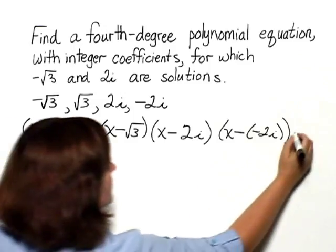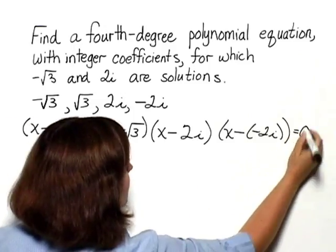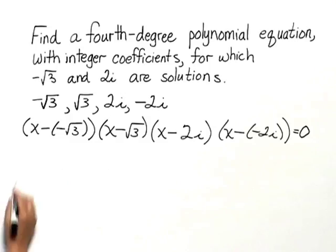And this would be equal to 0, which would give us a polynomial equation. Now let's multiply this out. First of all,